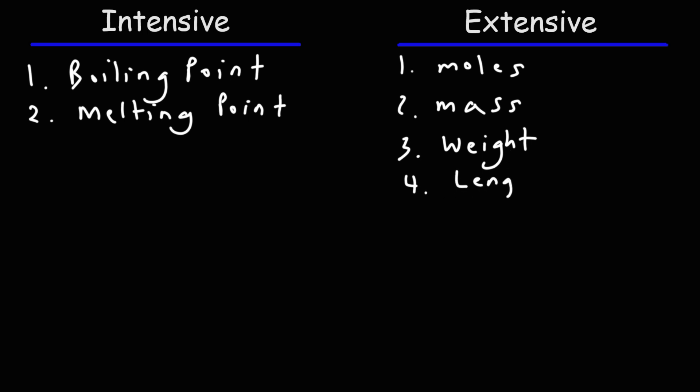The length of a substance is an extensive property. It depends on how much of the substance you have — the more that you have, likely the longer that substance will be. And as the length increases, the area increases, so area is dependent on the quantity of matter, making it an extensive property. The same is true for volume. Volume is length cubed, so volume is also an extensive property.